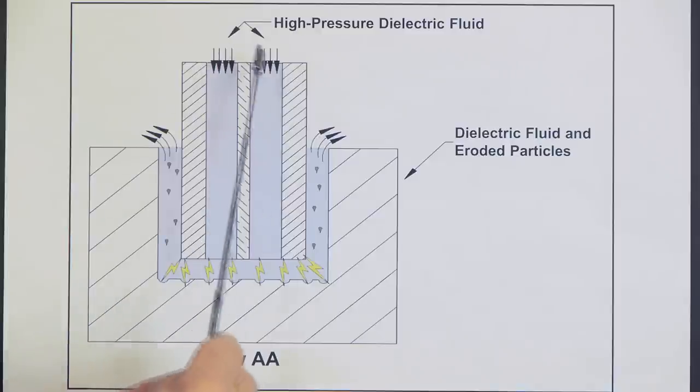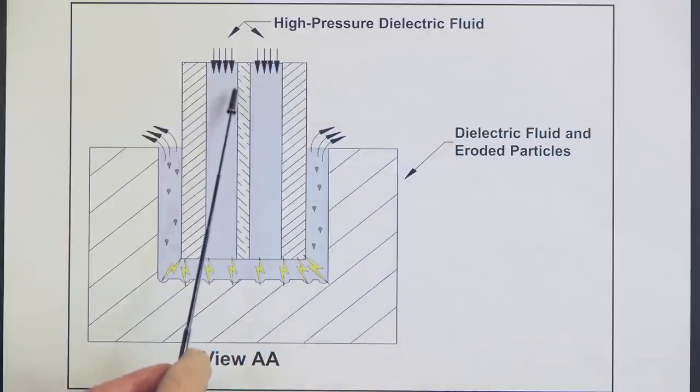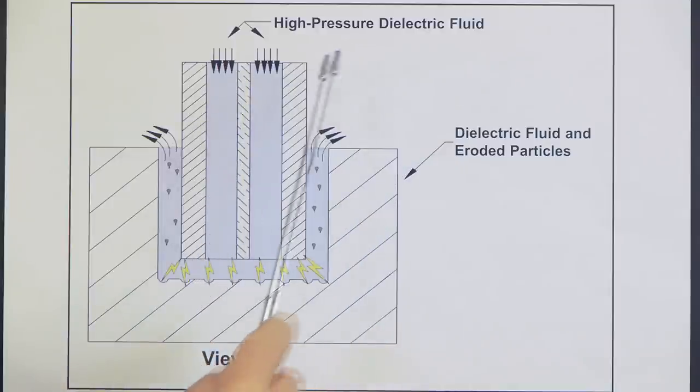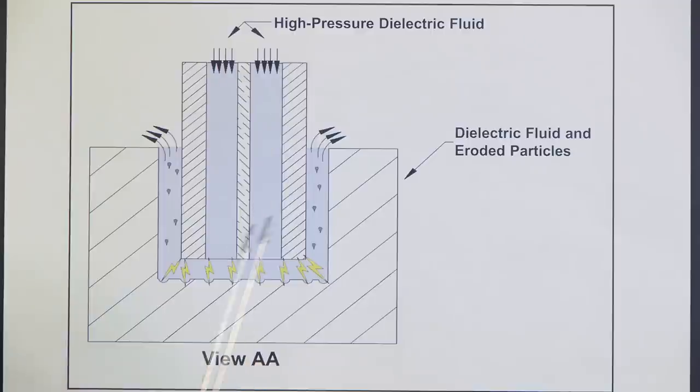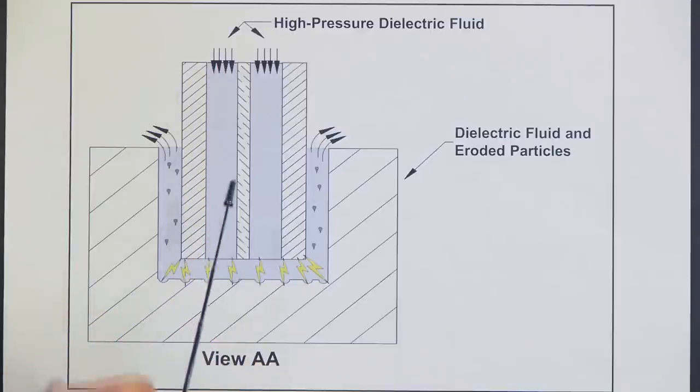High-pressure dielectric fluid enters the center of the electrode. Remember, the dielectric fluid acts as a resistor. This high-pressure fluid, which is basically ionized water, acts like a resistor. When energy is applied to the electrode, sparking occurs. Notice the erosion that takes place, and also some erosion takes place from the electrode.